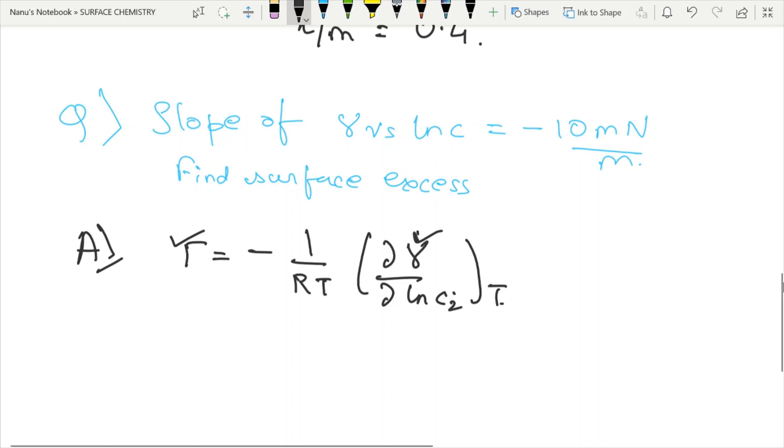Let's see what the question has said. It is said that the slope of gamma versus ln c is minus 10 millinewton by meter. And we need to find surface excess. So this d gamma by d ln c, that is the slope. That value is already given. We only need to write minus 1 over RT. Many people do not know the unit of surface excess. In these cases it's better that you write the units, especially when you're using R. Don't mess up the units. So you can write minus 10 millinewton per meter as 0.01 newton per meter.